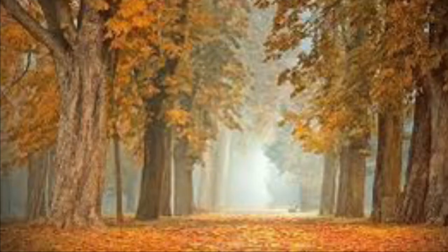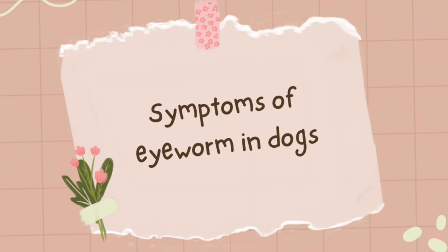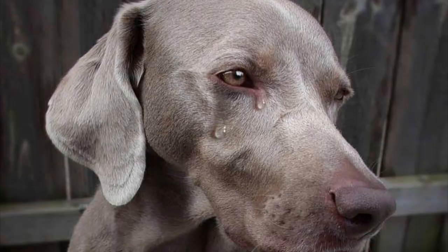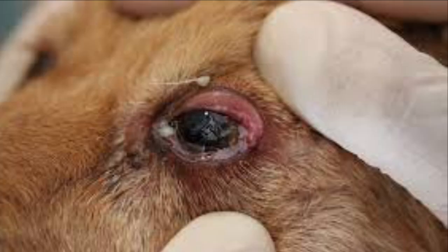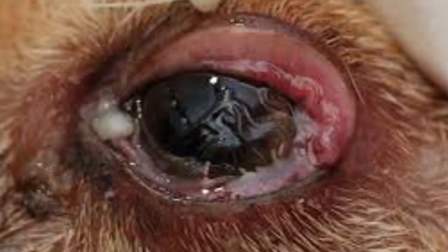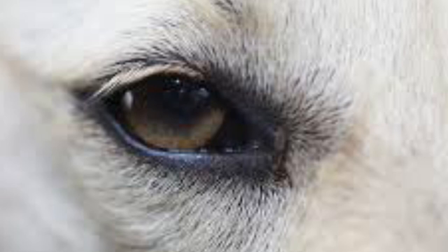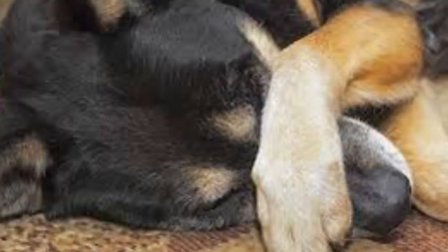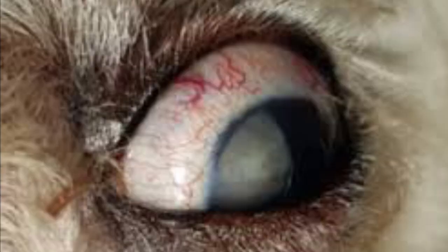It is more prevalent during fly season, which is late spring through early fall. Symptoms of eye worm in dogs include: excessive tearing of the eyes, inflamed conjunctiva, slow healing sores or ulcers on the corneas, blindness (which is rare), itching of the dog's eyes, and excess blood vessels on the whites of the eyes.